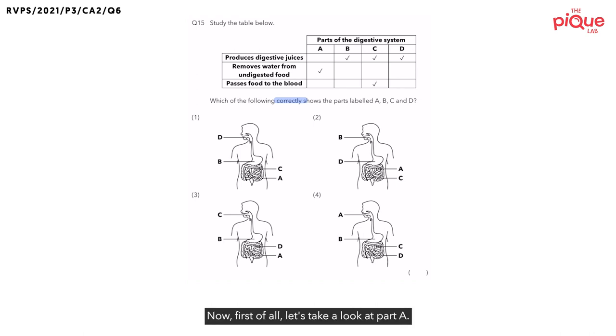Now, first of all, let's take a look at part A. We can see that part A removes water from the undigested food. Now, this is a function of which part of the digestive system? This is the function of the large intestine. So, let's write this out. We know A must be the large intestine.